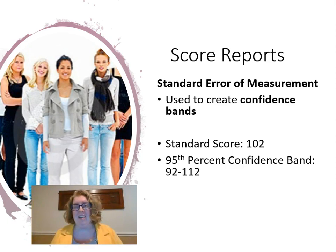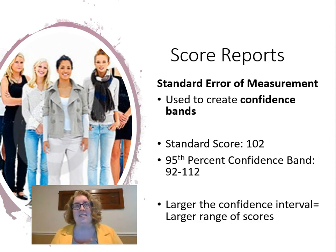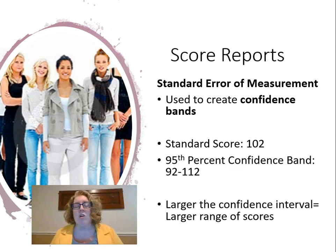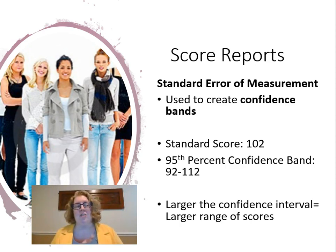If I wanted to be 100% sure of a range of scores, I could say I'm 100% sure I scored somewhere between zero and 200. The higher the confidence I want, the larger the range of scores. If I only wanted to be 80% confident, I could have a much narrower band. The more confident I want to be, the larger the range; the less confident I need to be, the smaller the range. The 95th percentile is usually the mark we use in statistics that we feel pretty comfortable with.